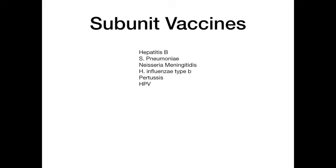The types of subunit vaccines are: hepatitis B, Strep pneumoniae, Neisseria meningitidis, H. influenzae type B, pertussis, and human papillomavirus (HPV). A quick shortcut: subunit vaccines target encapsulated bacteria — so if you know S. pneumoniae, N. meningitidis, and H. influenzae type B, you'll get most questions correct. But if you want to know all of them including hepatitis B, pertussis, and HPV, here's a mnemonic.